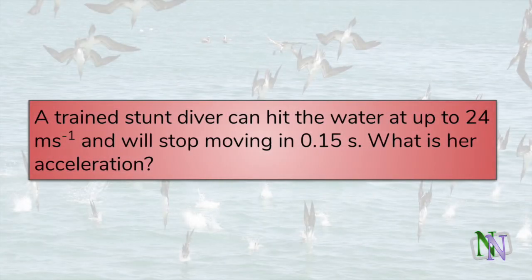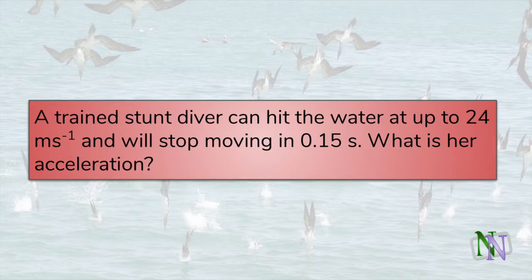Here is an example of a calculation. A trained stunt diver experiences a rapid change in velocity from 24 meters per second down to 0 when she enters the water in 0.15 seconds. We can use these data to calculate her acceleration. She is slowing down, and we should be able to recognize that fact in the calculation.